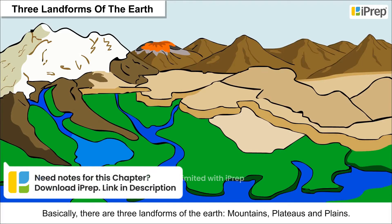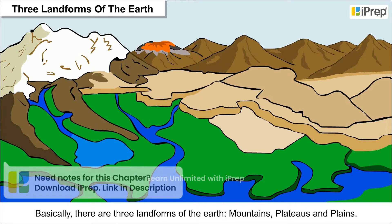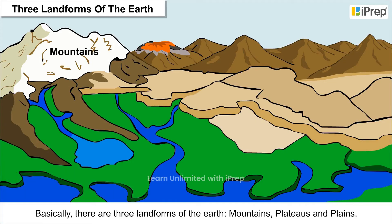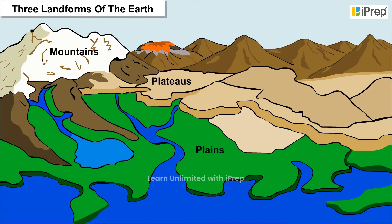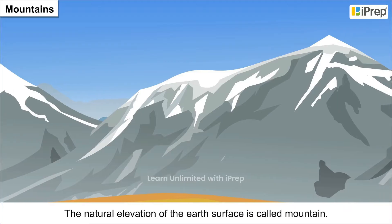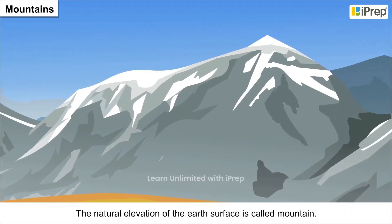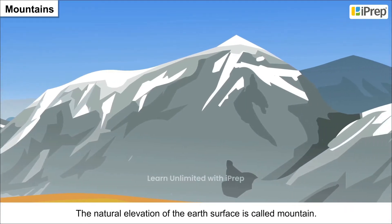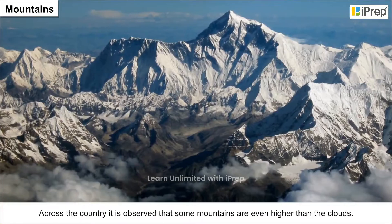Basically there are three landforms of the earth: mountains, plateaus, and plains. We can divide these landforms on the basis of their elevation and slope. The natural elevation of the earth's surface is called a mountain.